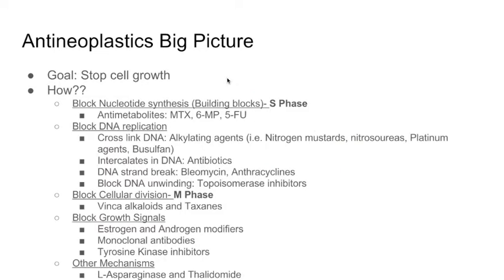For anti-neoplastics, we can divide them into different categories. The first thing we can do to stop cell growth is to block nucleotide synthesis — these are the building blocks. If we can block nucleotide synthesis, we won't be able to make DNA and the cell will eventually die. This happens specifically in the S phase. This is achieved by the antimetabolites.